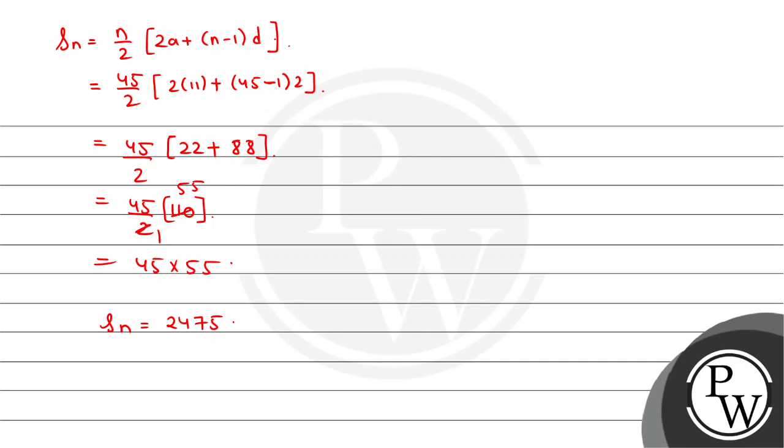2475. This is our answer. The sum of all two-digit odd numbers is 2475. Hope you understood it well. Best of luck!